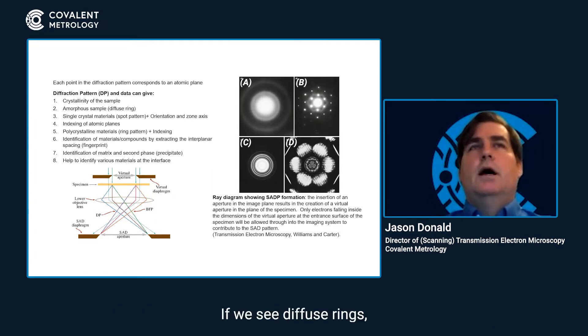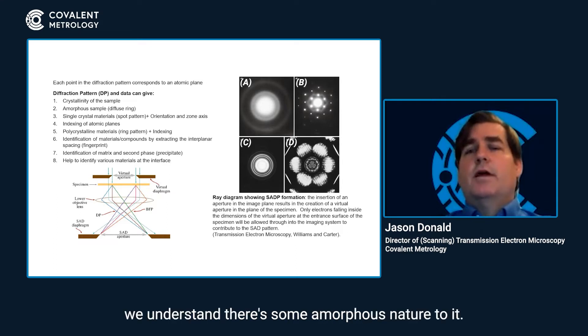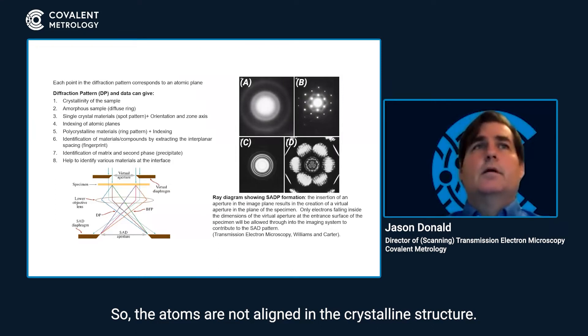If we see diffuse rings, we understand there's some amorphous nature to it. So the atoms are not aligned in the crystalline structure.